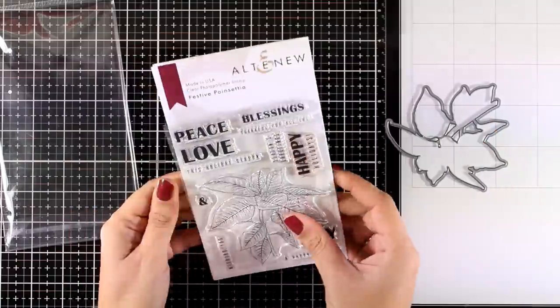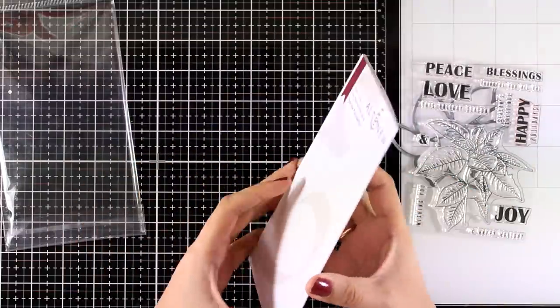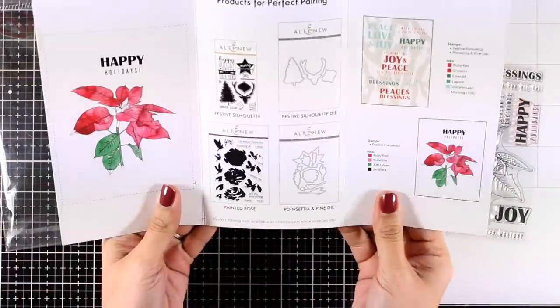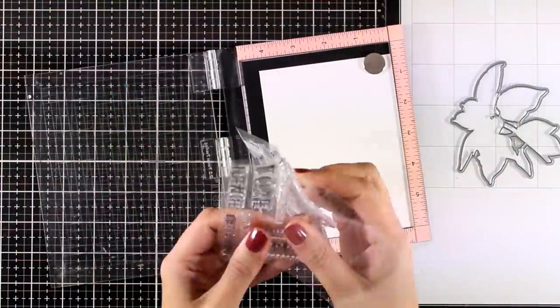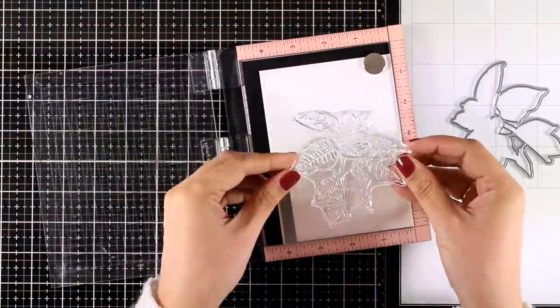For my card today, I will be using this stamp set, which is called Festive Poinsettia by Altenew, and it has this gorgeous poinsettia flower. This is going to be my focal point, so I'm going to stamp it.